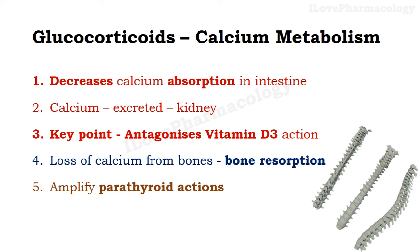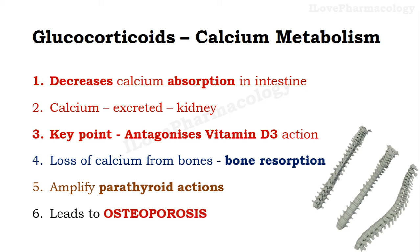Parathyroid hormone functions to balance the calcium levels. Once there are low calcium levels in the body, it tries to extract calcium from the bone, leading to bone resorption. Finally, this leads to osteoporosis. So there will be a risk of osteoporosis if glucocorticoids are used for a prolonged duration of time.